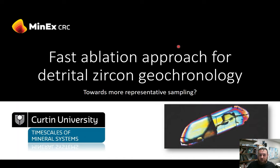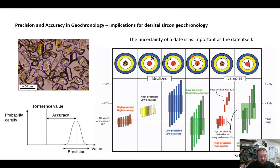By rapidly producing geochronology to help us understand where we are in stratigraphy. Traditionally with geochronology we've been aiming more and more for higher precision analysis. Precision is a normal bell curve, normal distribution, and we're reducing the uncertainty.